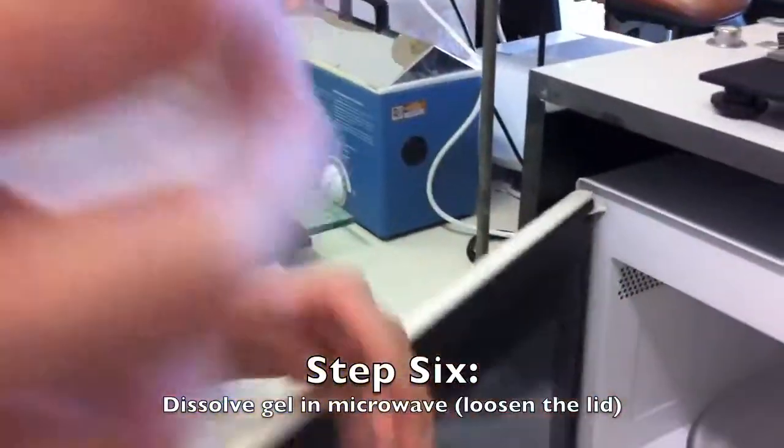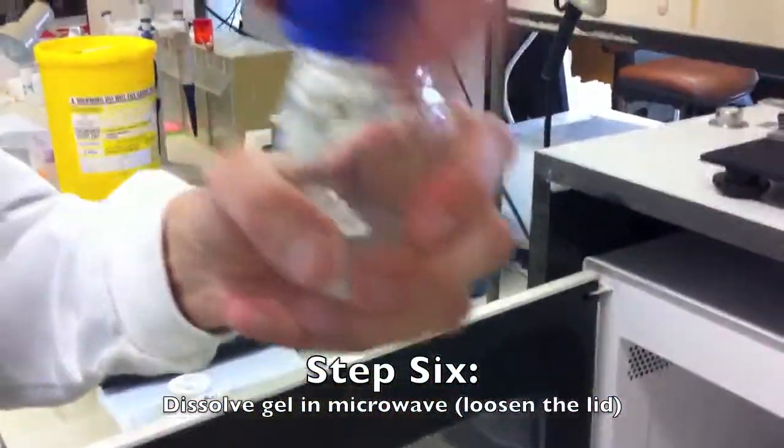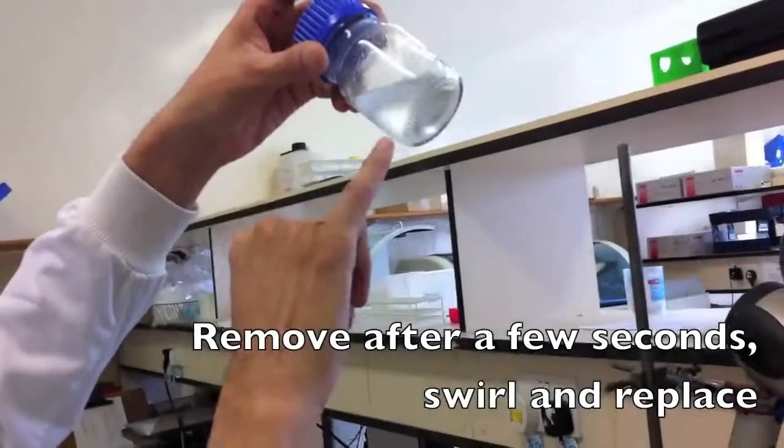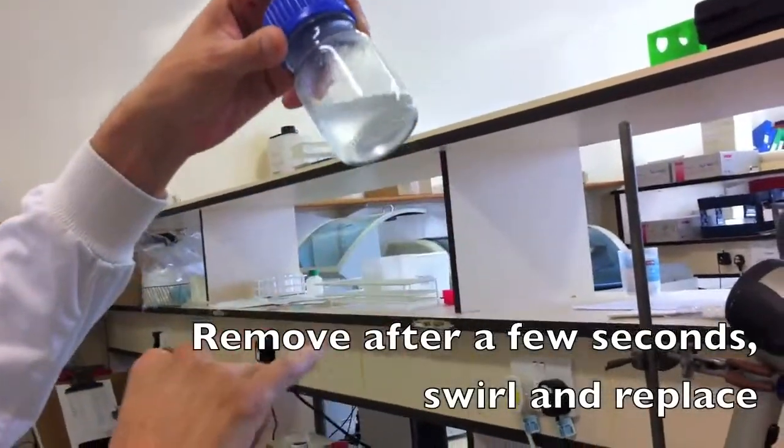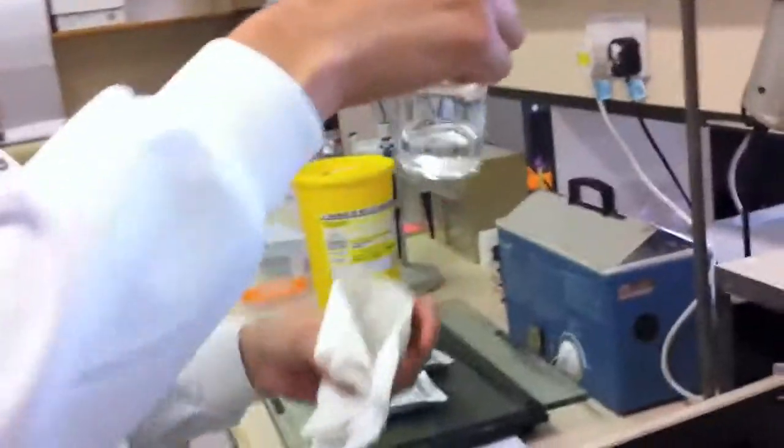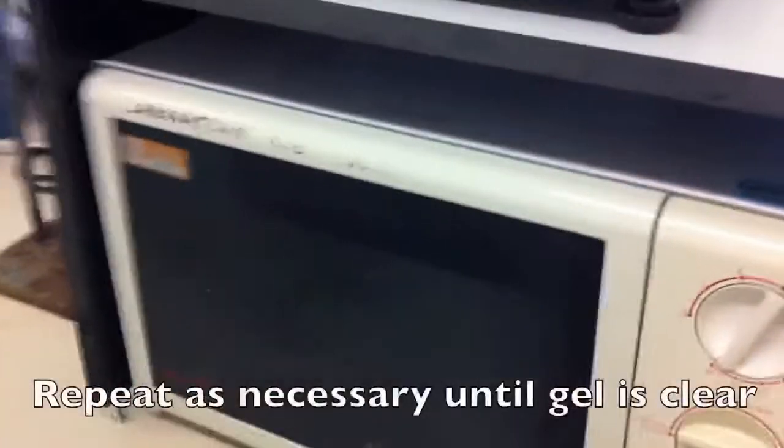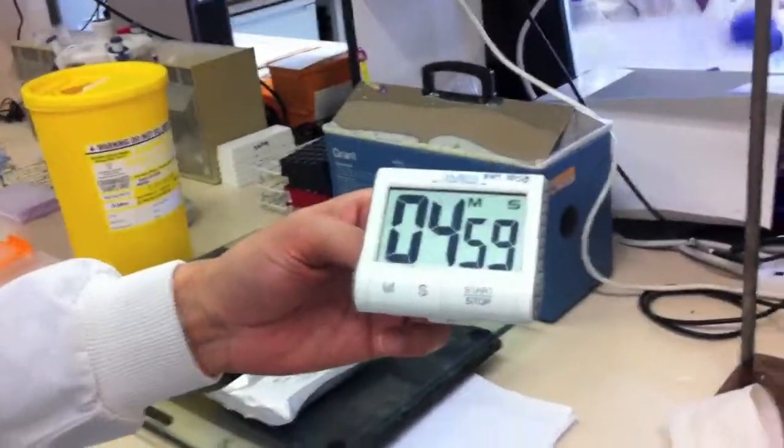In this step, we need to turn the gel into a clear liquid and we do so by adding heat from the microwave. Remove the gel every few seconds, swirl and replace it back, making sure the lid is loose every time you put it in the microwave. Repeat as many times as necessary until the gel is clear. Tighten the lid and then place in the water bath for five minutes.